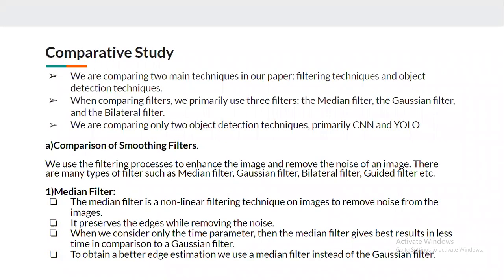In our comparative study, we compare two techniques: filtering techniques and object detection techniques. For filtering, we primarily use three filters — the median filter, the Gaussian filter, and the bilateral filter — and two object detection techniques: CNN and YOLO. We use the filtering process to enhance the image and remove noise. There are many types of filters such as median, Gaussian, bilateral, guided, etc., and we use three: median, bilateral, and Gaussian.